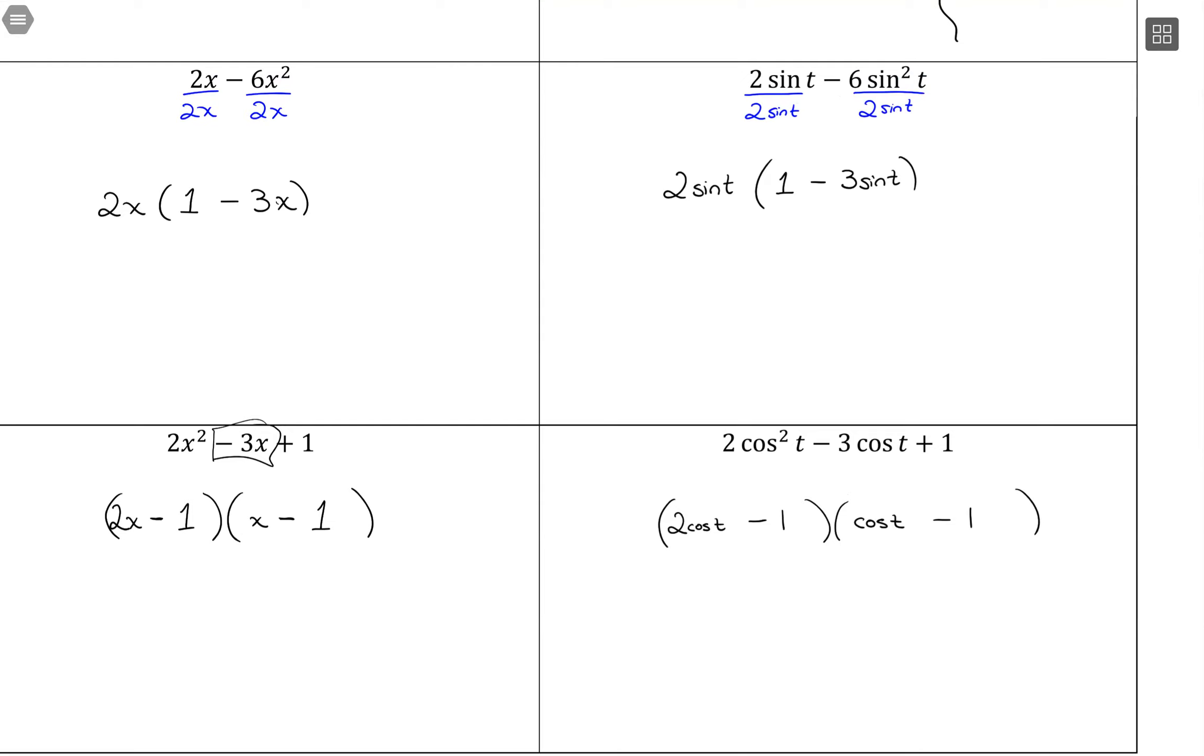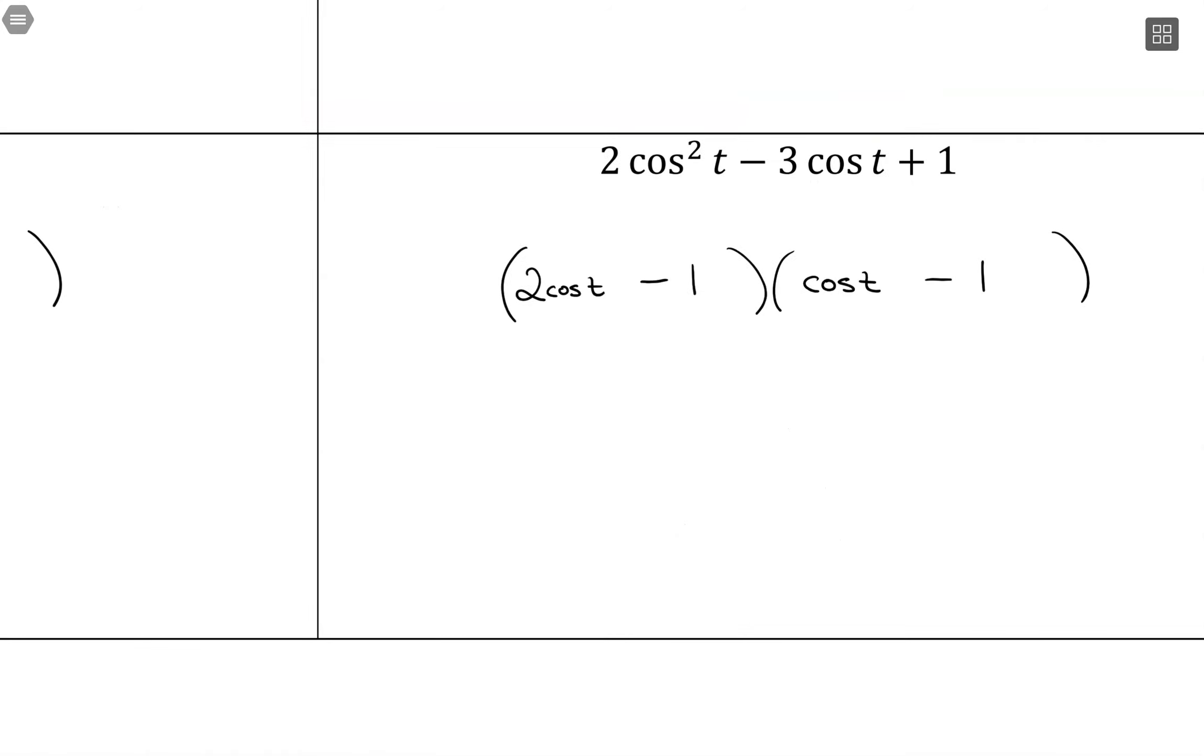So there's just some review of how we simplify quadratics and then how we can apply the same exact methods to our trig functions. And eventually, if it helps, like if we got this problem and it's easier to think of it in terms of x, if you just need to write it like this off to the side and simplify, and then just make sure you substitute back in for x that cosine of t, that absolutely works as well.